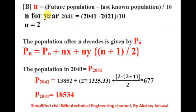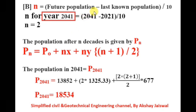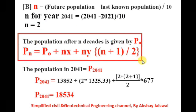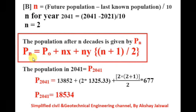We are also asked to find the future population in 2041. Again we find n: n = (future year − last known year) / 10 = (2041 − 2021) / 10 = 2. The formula to find the future population using the Incremental Increase Method is: Pn = P0 + n×x + n×y×(n+1)/2.